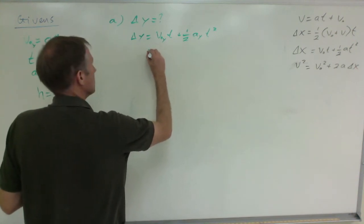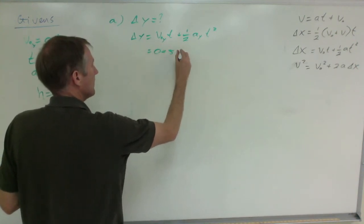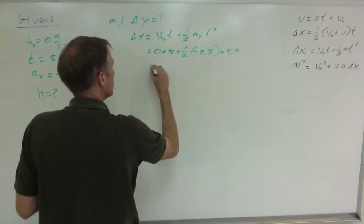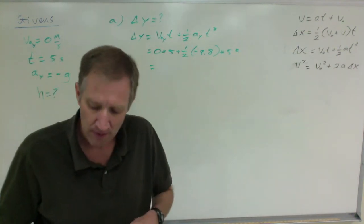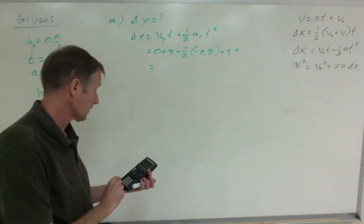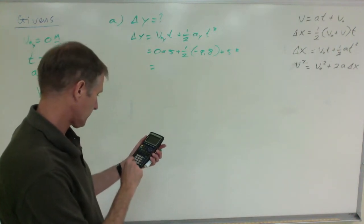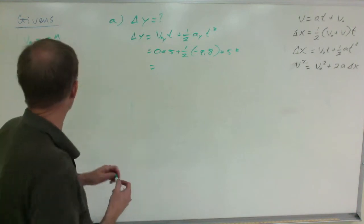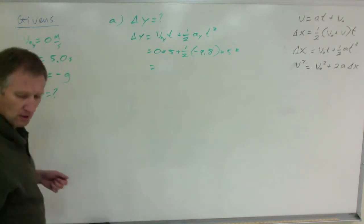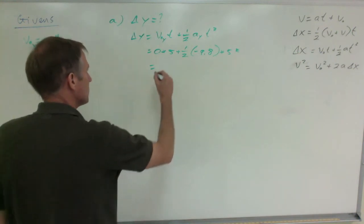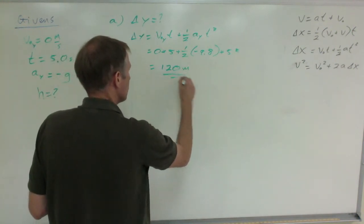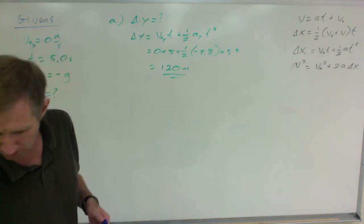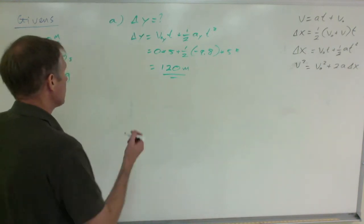That's going to be zero times five plus one-half times negative nine point eight times five squared. Of course, zero times five is zero, not five. That comes out to be 122.5. To two significant digits, 122.5 is 120 meters.